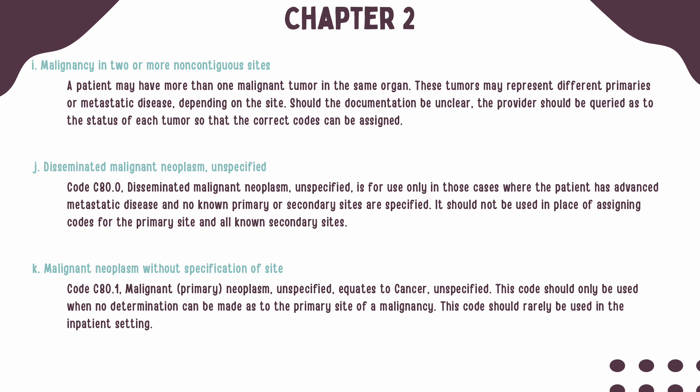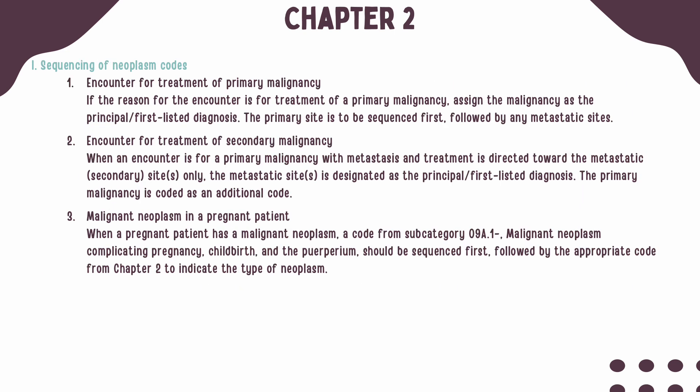When the patient has advanced metastatic disease and there is no known primary or secondary site specified, code C80.0 should be assigned. This should not be used in place of any codes for all known primary or secondary sites. Code C80.1 should only be used when there is no determination that can be made for the primary site of the malignancy, and it should rarely be used.